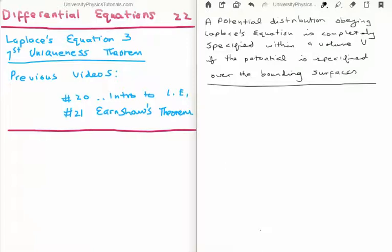Specifically in this video I'm going to discuss and prove the first uniqueness theorem. The previous videos to this are as follows. Number 20 I introduced Laplace's equation and showed that it does not permit local maxima or local minima. And in number 21 I had an aside and discussed Earnshaw's theorem.